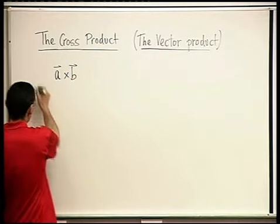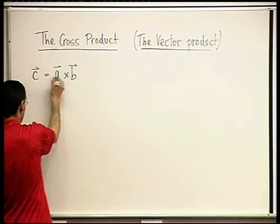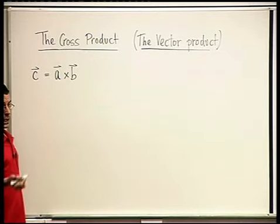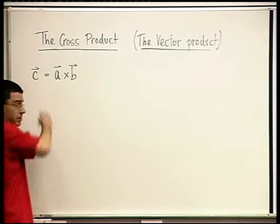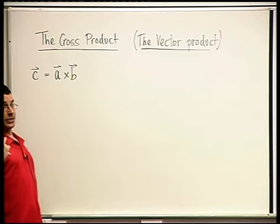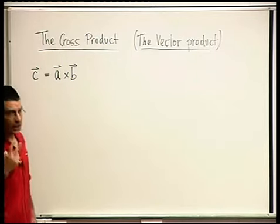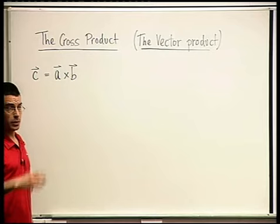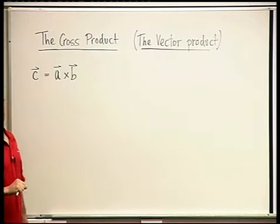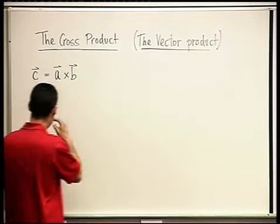Saying that the result is a vector means that in order to tell you what C is, I need to tell you two things: what the direction of C is, and what the length of C is. If I tell you the direction and the length, that fixes C. So we're going to start with the length.